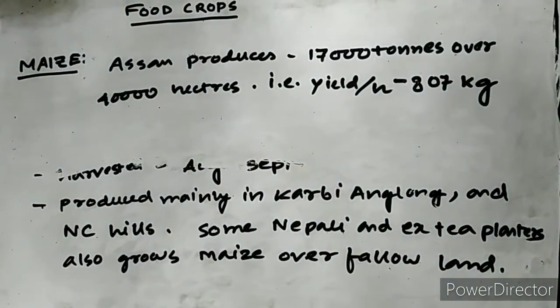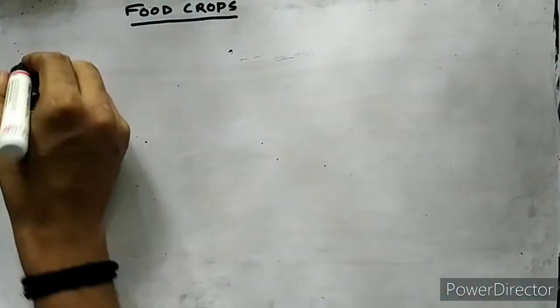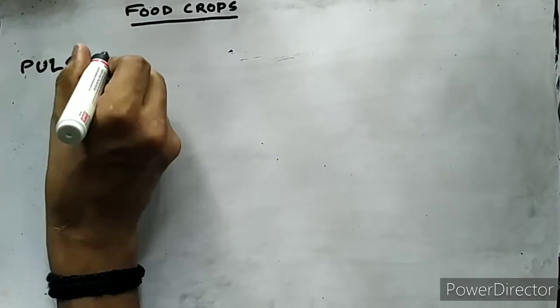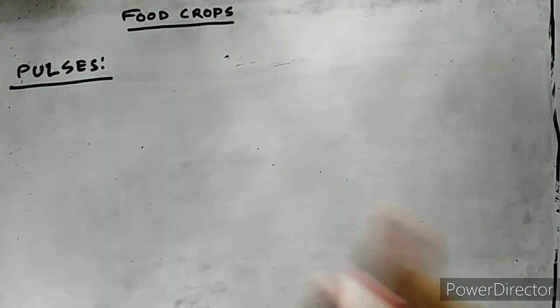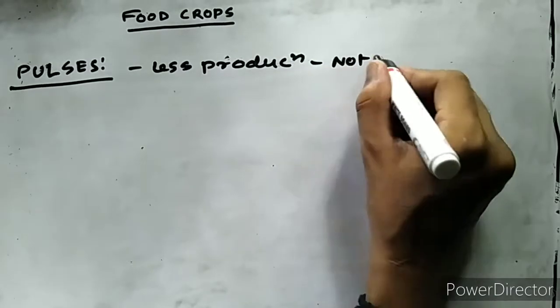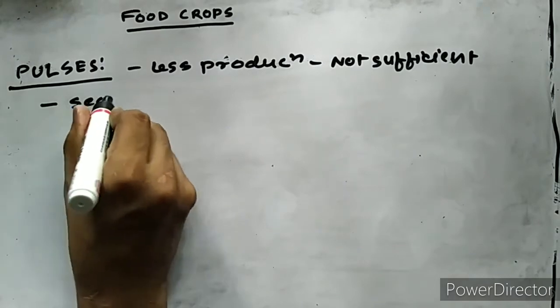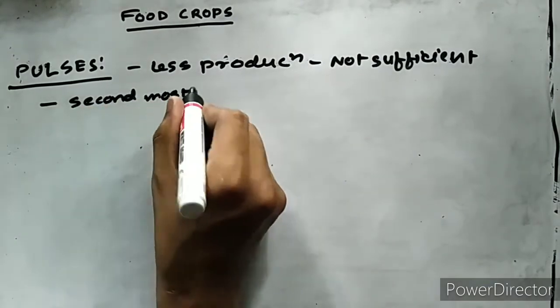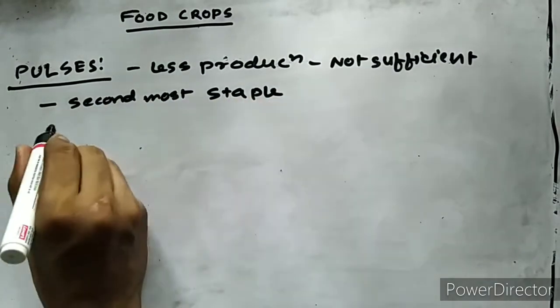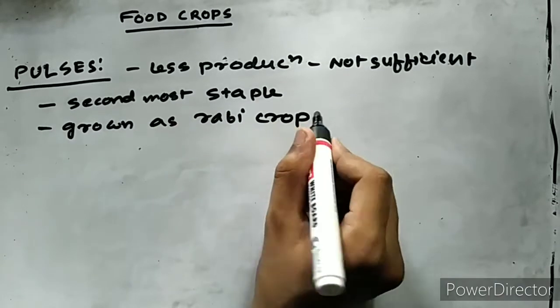Next we come to the pulses. Assam grows some quantity of pulses, but the state is not self-sufficient in this. Part of this is our second most staple food. Pulses are grown as a rabi crop.